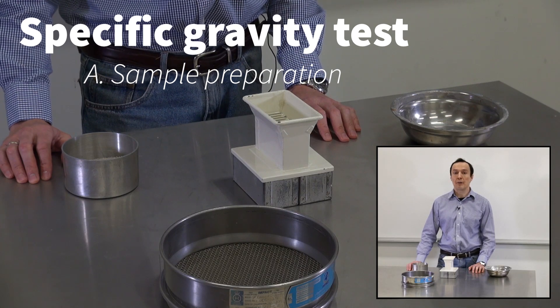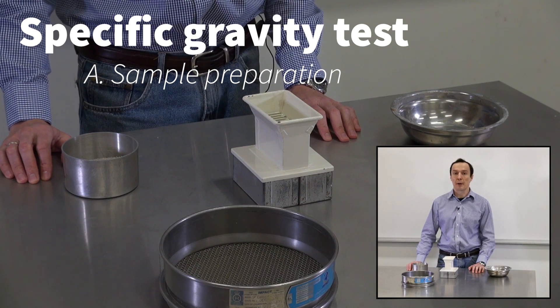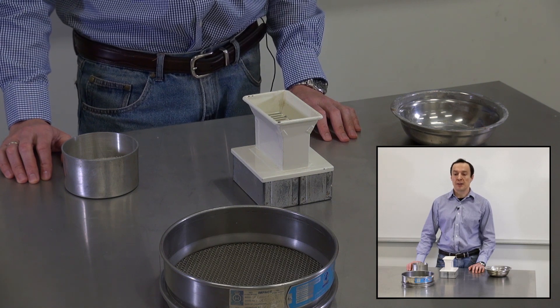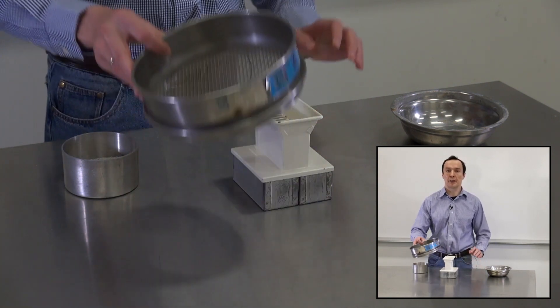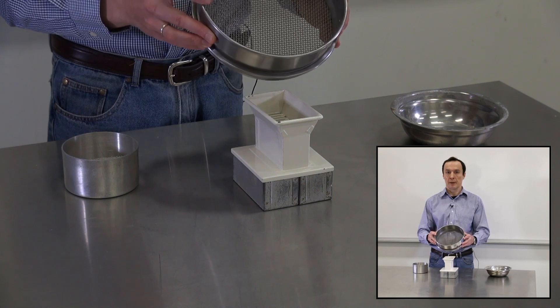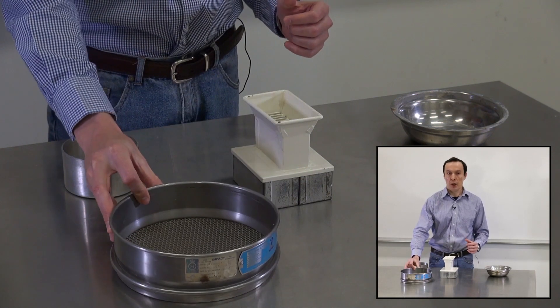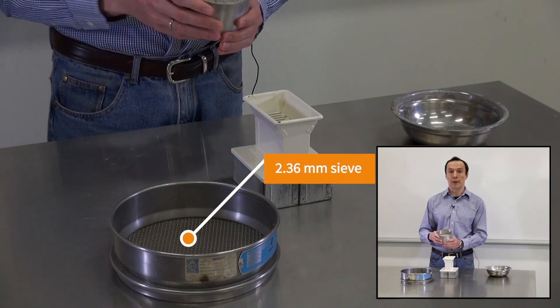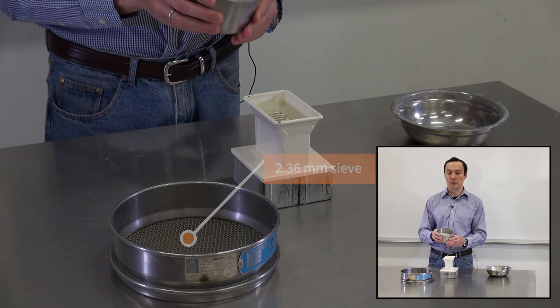Before we do a specific gravity test, we need to prepare a sample. First of all, we need to sieve it through a 2.36 millimeter sieve, shown here. We have done this before, and this is the soil that we will use for a specific gravity test.